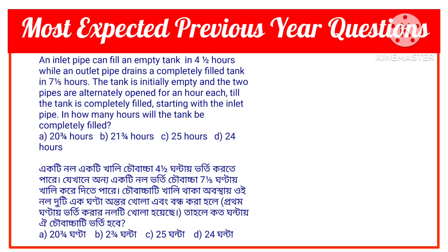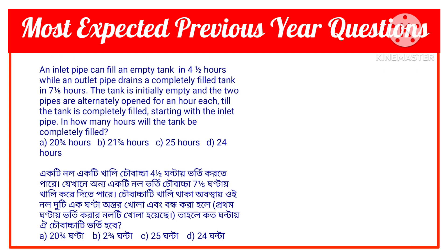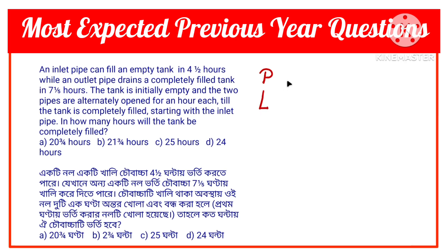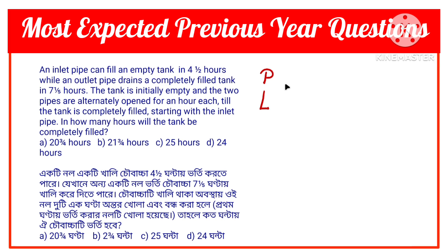Let us go through the question. An inlet pipe — let it be P — can fill an empty tank in four and a half hours. An outlet pipe — let it be L — drains a completely filled tank in seven and one-fifth hours. So we have one inlet pipe and one outlet pipe (or leak).